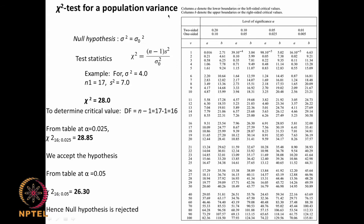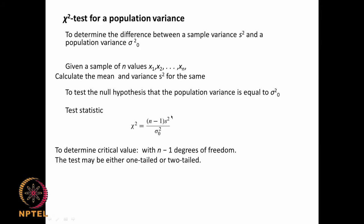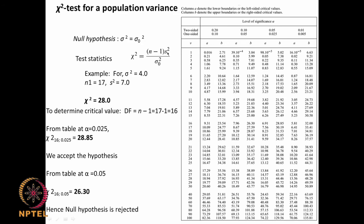Let us look at a simple example. Null hypothesis: σ² = σ₀². Alternate: they are not equal. The test statistic is (n−1)s²/σ₀². We have σ₀ = 4, n = 17, and s² = 7. So the test statistic is (16 × 7) / 4 = 28. Our chi-square calculated value is 28.